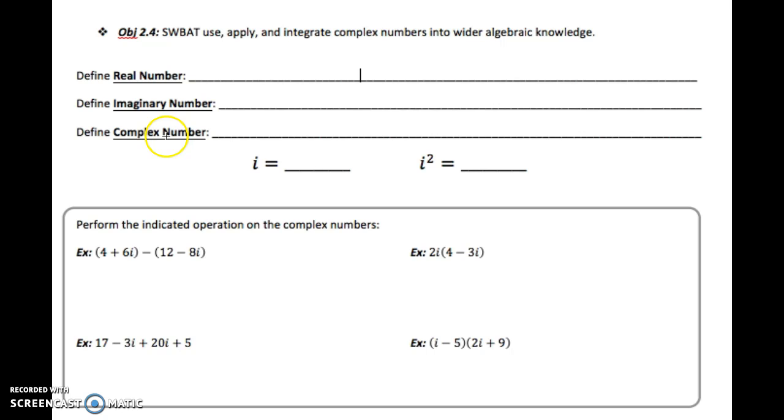So first we need to go through a few definitions. Our first definition is real number, which is what we've been using for as long as you've been doing math. A real number is any number on the number line. They can be positive or negative, whole numbers, decimals, or fractions. But as long as they are on the number line, they're going to count as a real number.